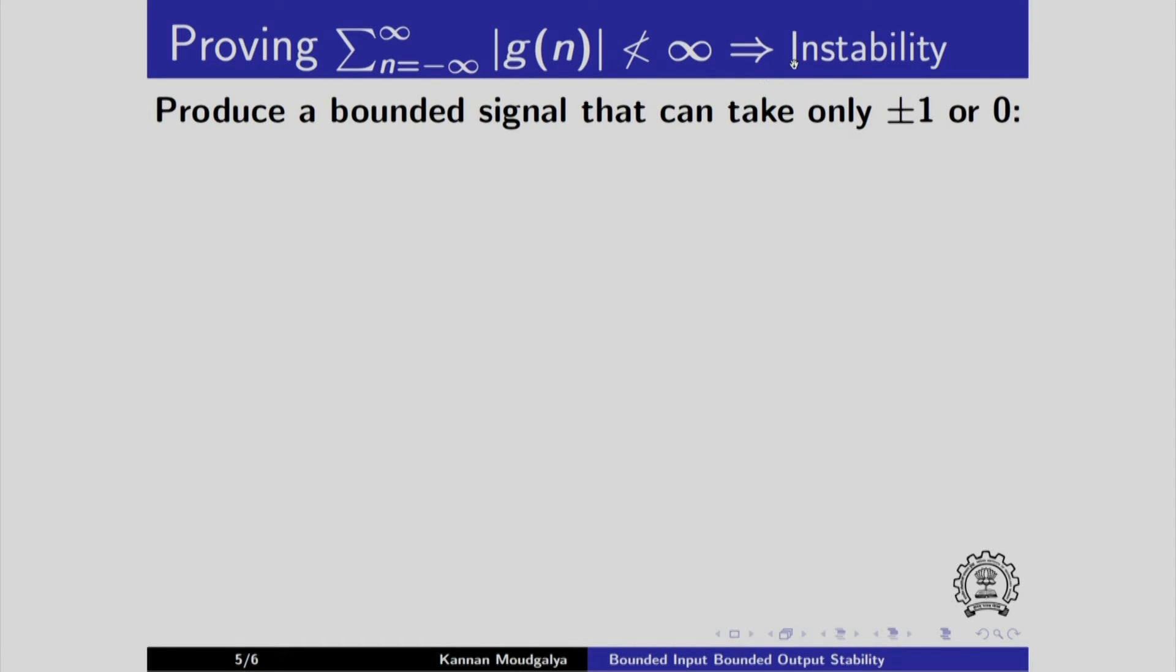What is meant by instability? That we need to produce some bounded input that will result in unbounded output. That is what is meant by instability. Let us produce a bounded signal, a particular bounded signal that takes the values either plus minus 1 or 0. How do we do this?